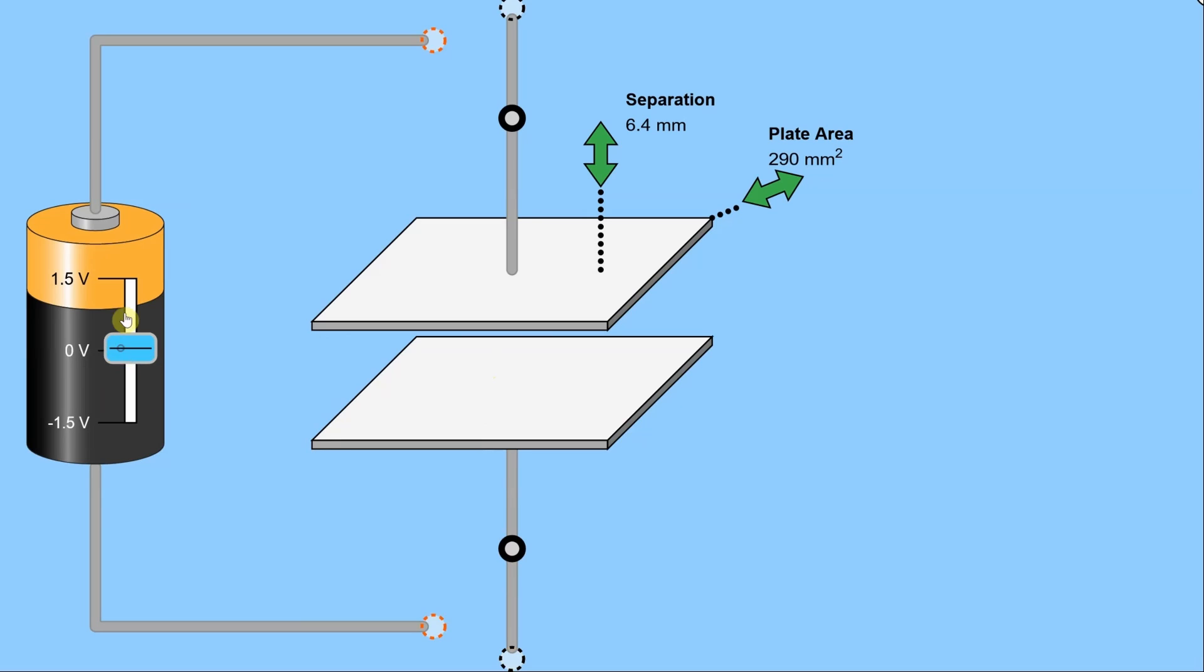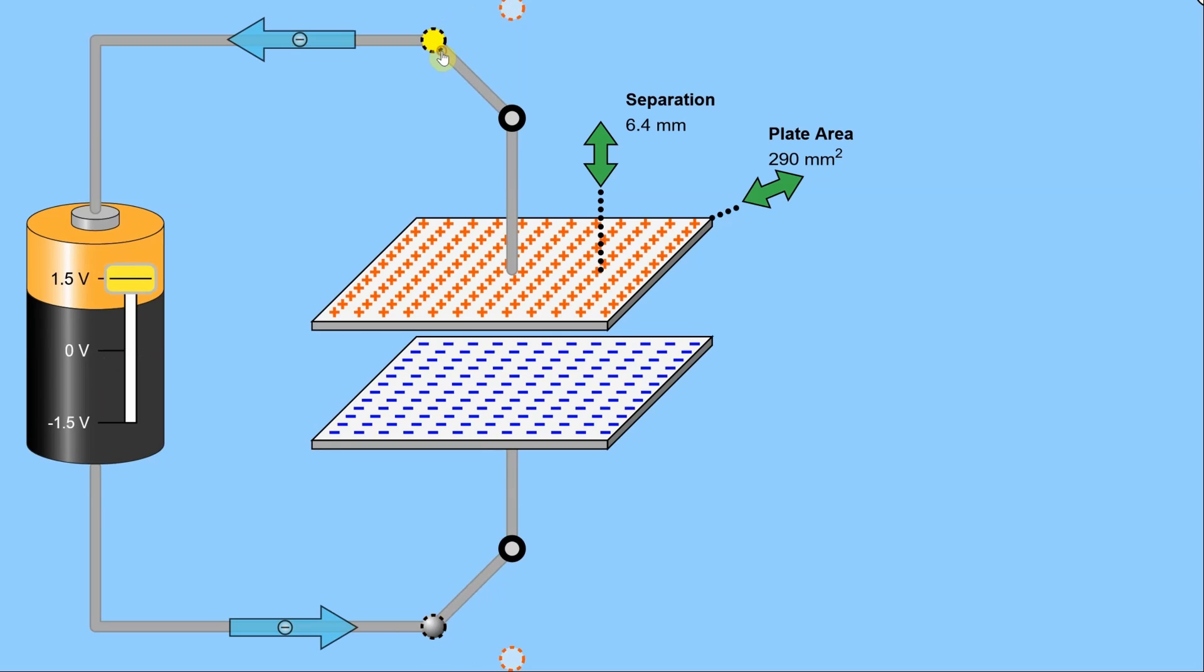I'm going to crank the voltage up to one and a half volts here from the battery and then I'm going to close the switch and let's see what happens. Well you'll note that these arrows showed up at the top and the bottom to indicate the direction of current flow or at least direction of electron flow. And then you'll see that all of these negative charges built up on the bottom plate and all of these positive charges built up on the top plate.